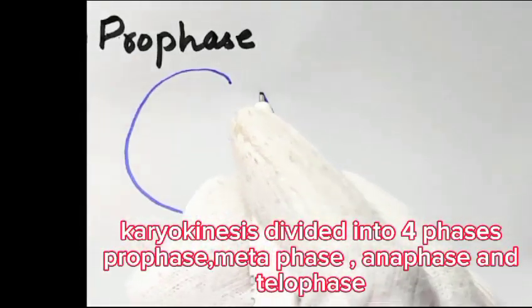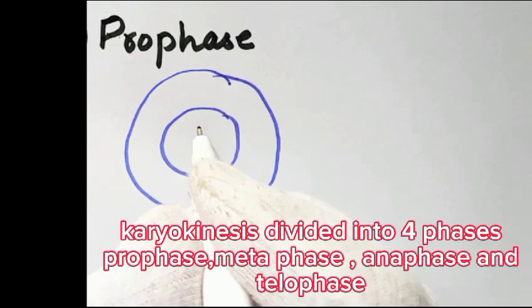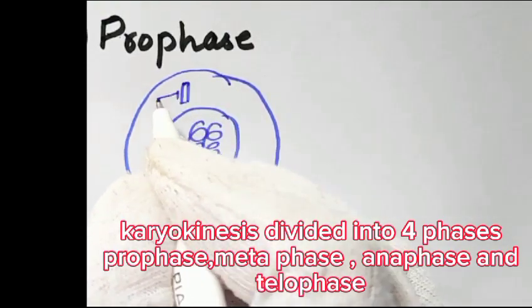Cariokinesis is divided into four phases: prophase, metaphase, anaphase, and telophase.